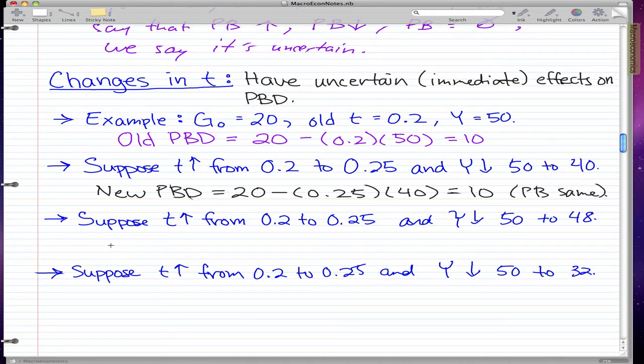Now, suppose T increased from 0.2 to 0.25 like the last example, and Y decreased from 50 to 48. The new PBD here is equal to 20 minus 0.25 times 48, which equals 8.